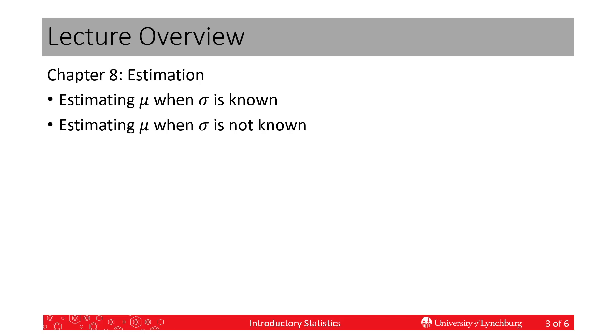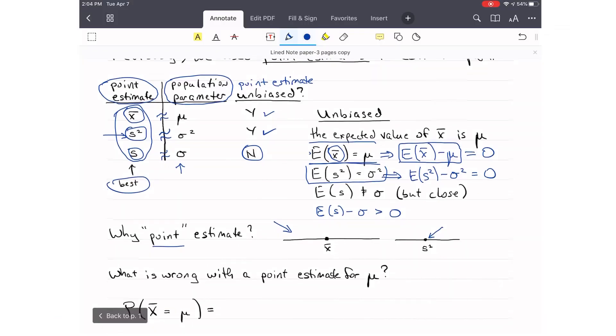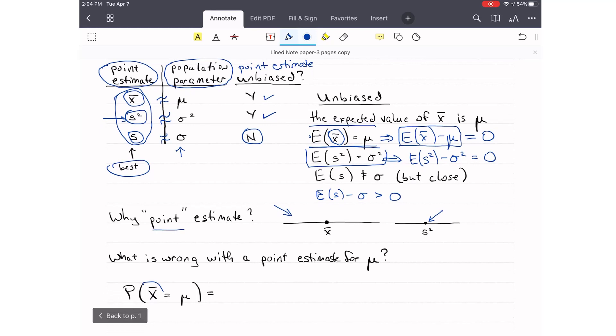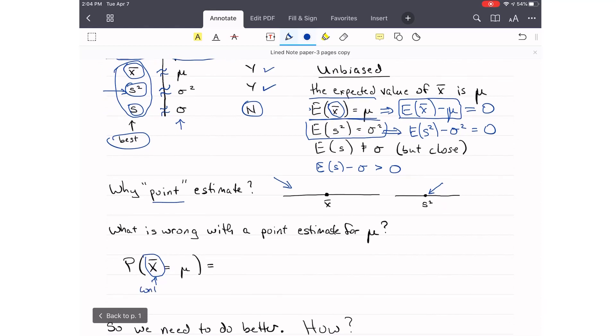This is my random variable here. If this is continuous, and I have an equal sign here to some value mu, what's the probability that x-bar is exactly equal to mu? Another way of asking this is, on the test I said,